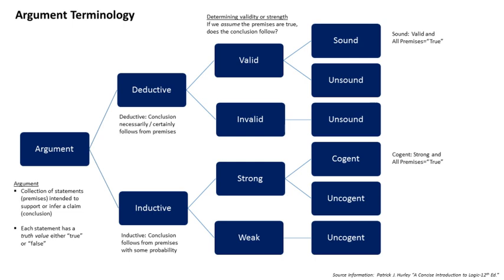Inductive reasoning has been criticized by thinkers as far back as Sextus Empiricus. The classic philosophical treatment of the problem of induction was given by the Scottish philosopher David Hume. Although the use of inductive reasoning demonstrates considerable success, its application has been questionable. Recognizing this, Hume highlighted the fact that our mind draws uncertain conclusions from relatively limited experiences. In deduction, the truth value of the conclusion is based on the truth of the premise. In induction, however, the dependence on the premise is always uncertain. For example, the assumption that all ravens are black becomes inconsistent with the fact that there are white ravens, so the general rule is inconsistent with the existence of the white raven.